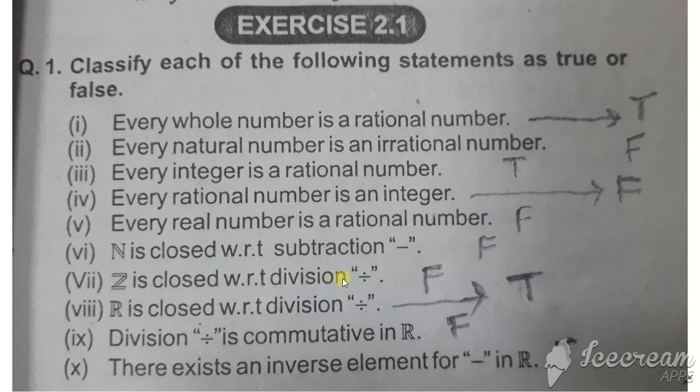Statement seven: Z is closed with respect to division. If you divide integers, the answer may be a fraction, which is not an integer. So this is false.